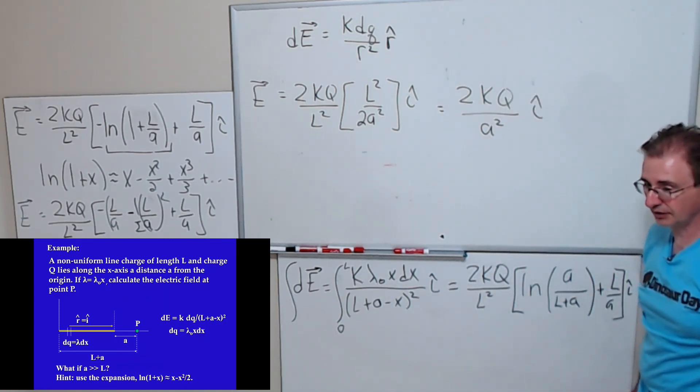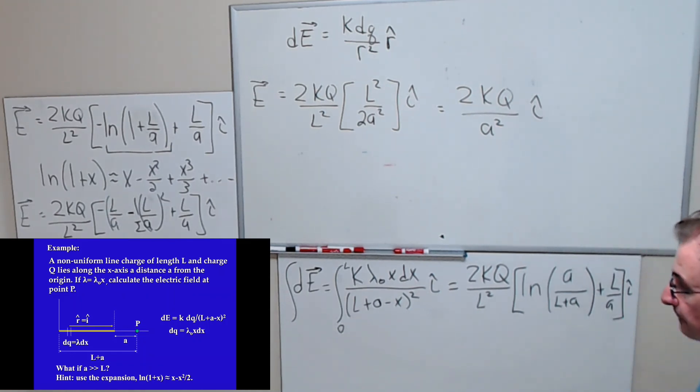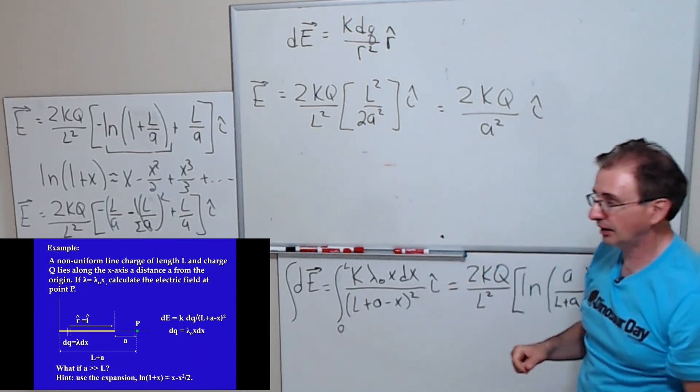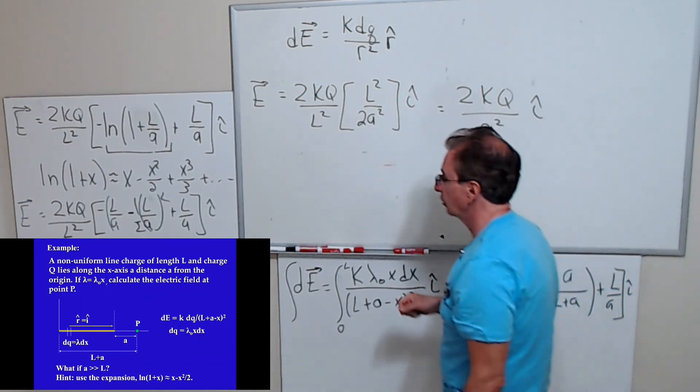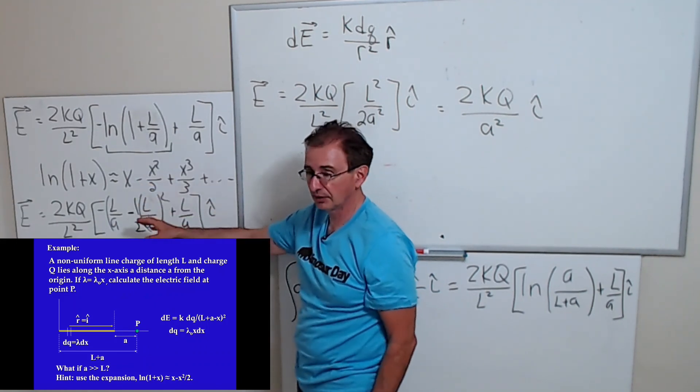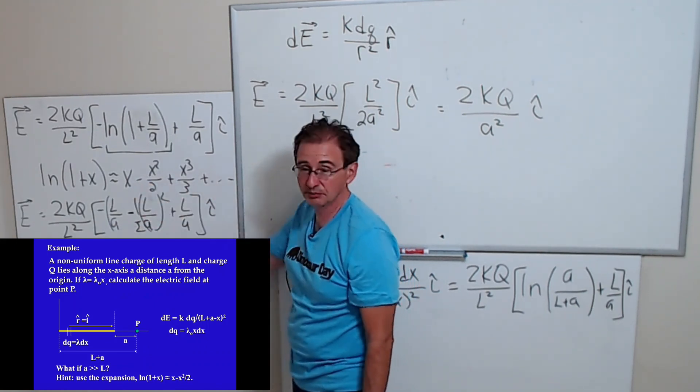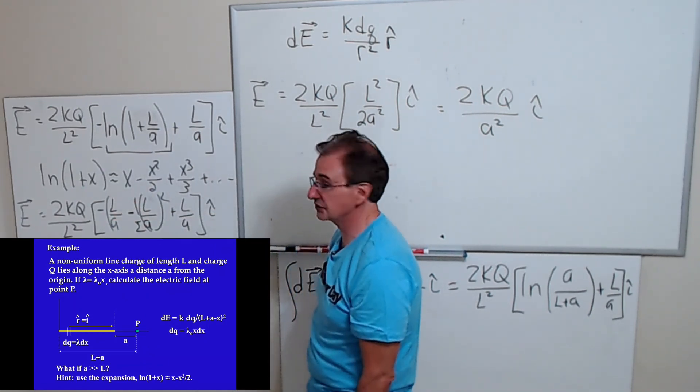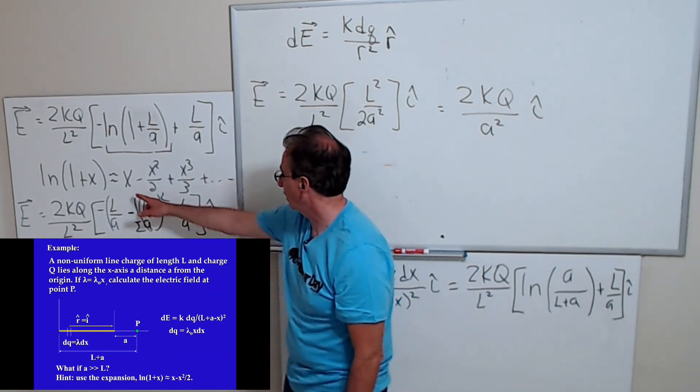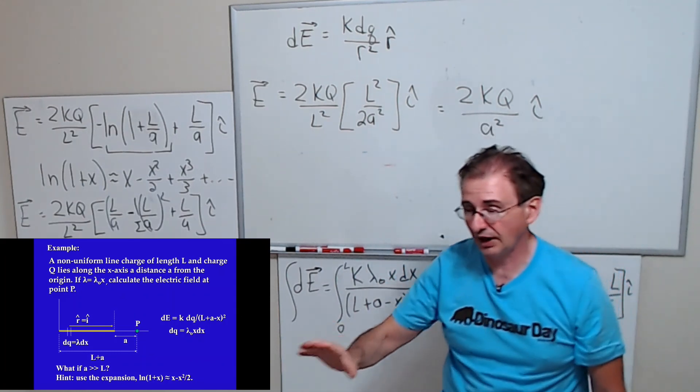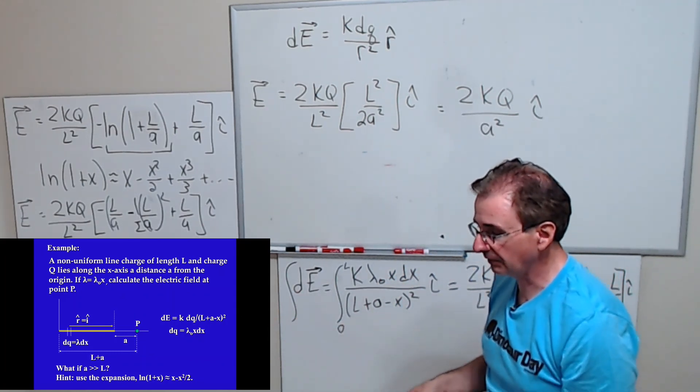And that's the field due to a point charge. So one of the tricks that you can do in problems like this, when you're looking at extreme cases, you can expand a function in a power series and keep the lowest term that survives in your power series. If I would have kept the first term, I would have gotten zero. But if I keep the first two terms, then you can see what the dependence is when A is very large.